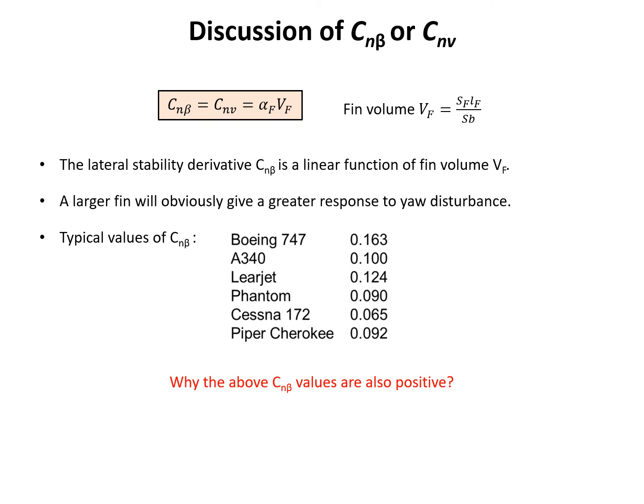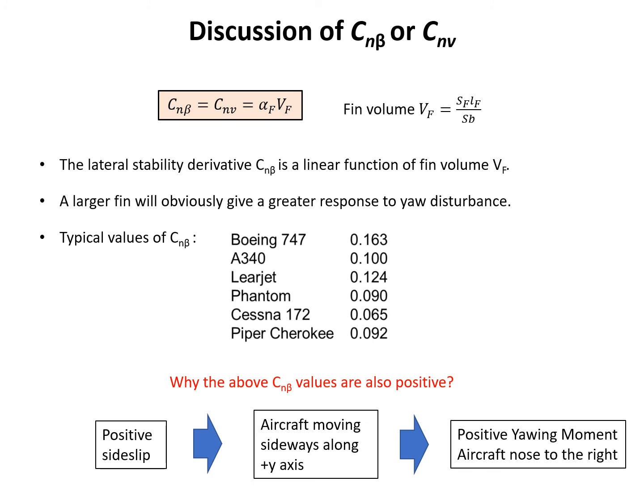So now the question is, did you notice all the C_nβ for different aircraft have positive value? Why is that? If we are in a positive sideslip, what it gives is the aircraft moving sideways along positive y-axis. That's what we're showing in our sketch. This positive sideslip will generate positive yawing moment, which means the aircraft nose to the right. So the nose will move to the right. That's why C_nβ is always positive.